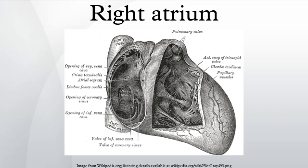During embryogenesis, the septum in the right atrium has an opening, the foramen ovale, which provides access to the left atrium. This connects the two chambers, which is essential for fetal blood circulation. At birth, the foramen ovale closes and leaves a depression in the atrial wall. When the first breath is taken, fetal blood flow is reversed and now travels through the lungs, no longer requiring the foramen ovale.